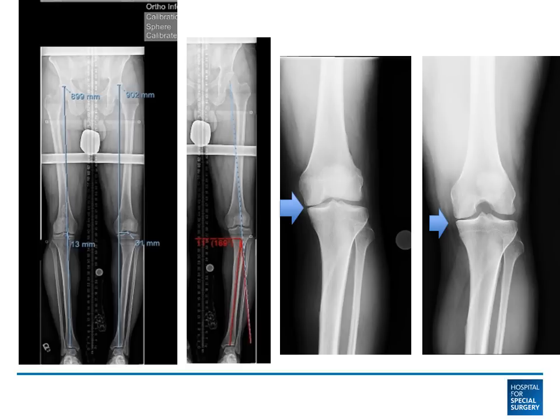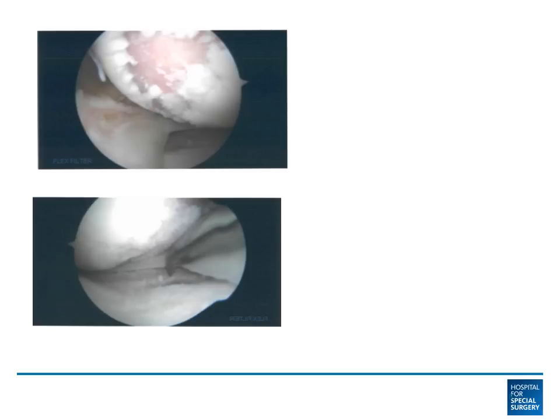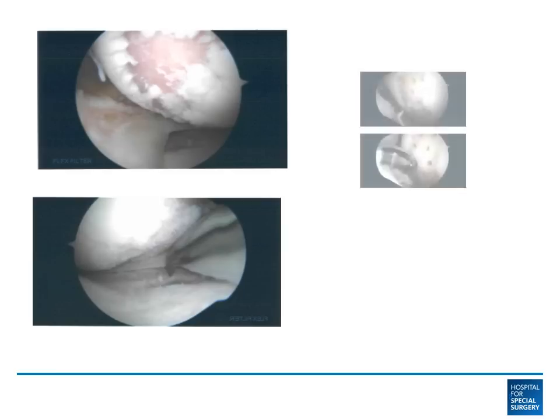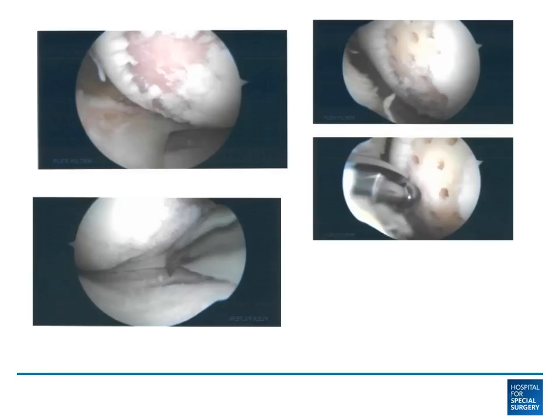We can cut the bone at the apex of this deformity just below the knee joint, correct it by 11 degrees, and expect to have a correction of the deformity. At the time of his surgery, I performed an arthroscopy to inspect and treat his knee, and I was able to see that he already has moderate to severe loss of cartilage on the inside part of the knee. We performed microfracture, making drill holes in the areas where there is complete loss of cartilage, which helps bring the bone marrow to the surface and helps regenerate the cartilage.